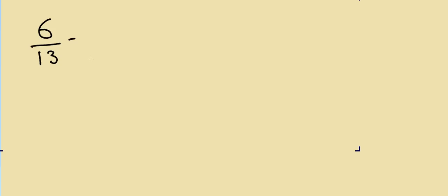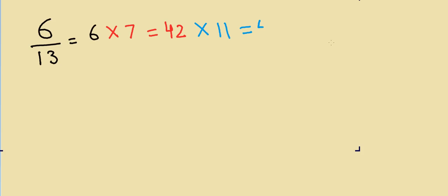First, I will take the number 6 and multiply it by 7. We know that 6 times 7 is 42. Then I will multiply 42 by 11. We have a video showing how to multiply a number by 11, but the simple trick is you take 4 and 2 and add both numbers together: 4 plus 2 is 6, so the answer is 462.